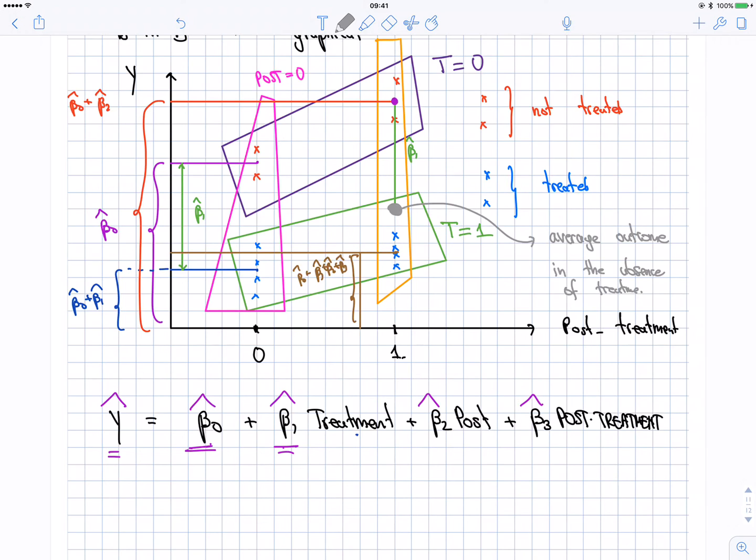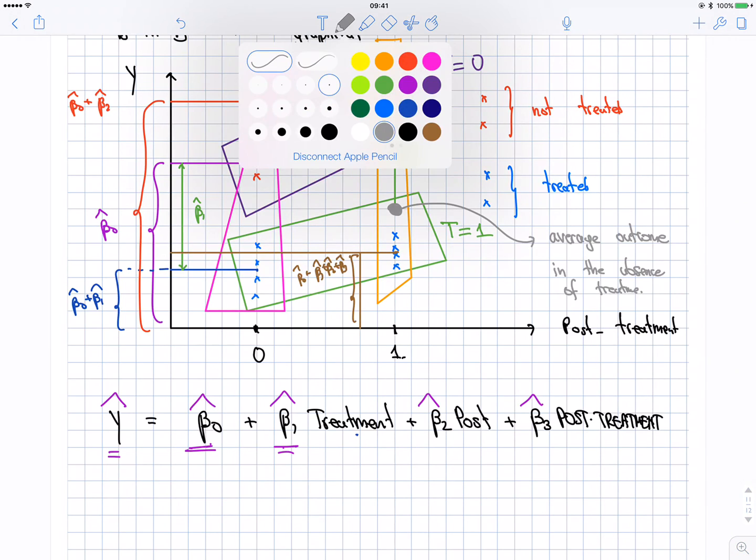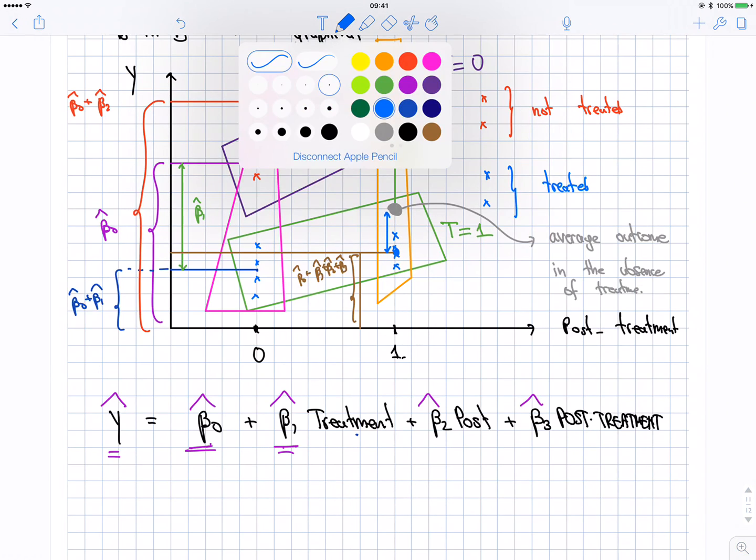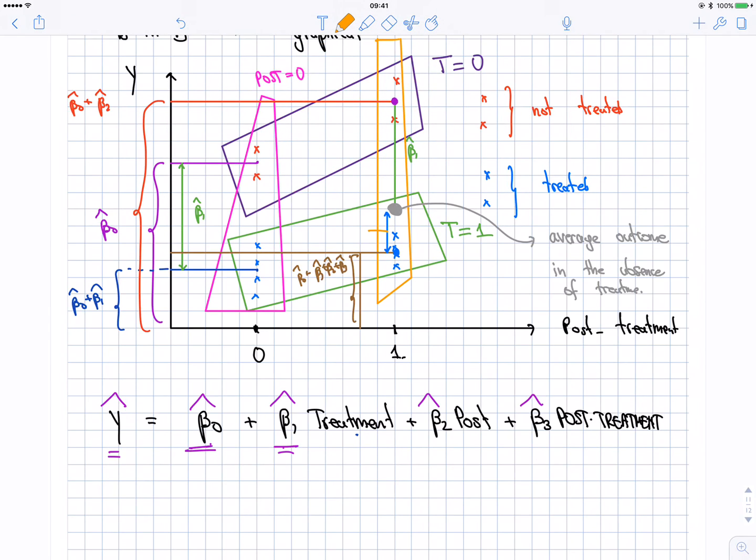What was the actual average outcome? Well, the actual average outcome was this ball here. So what should be this difference between these two? Let me do a line between them. This thing here is the main guy, and the main guy is the beta three hat. Remember?